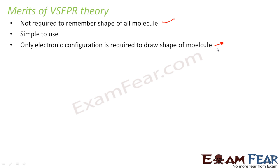Or you can see that even from the Lewis structure, you can find the VSEPR shape very easily, because that also only needs the electronic configuration to draw the shape.